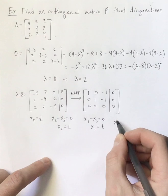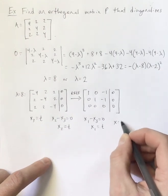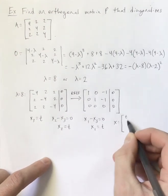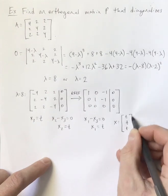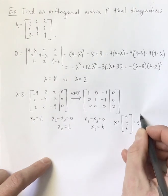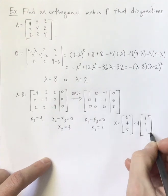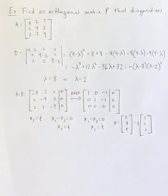So in other words, the eigenspace is the set of all vectors of the form T, T, T. And if I factor T out of that, I get 1, 1, 1. So 1, 1, 1 is the basis vector for that eigenspace.